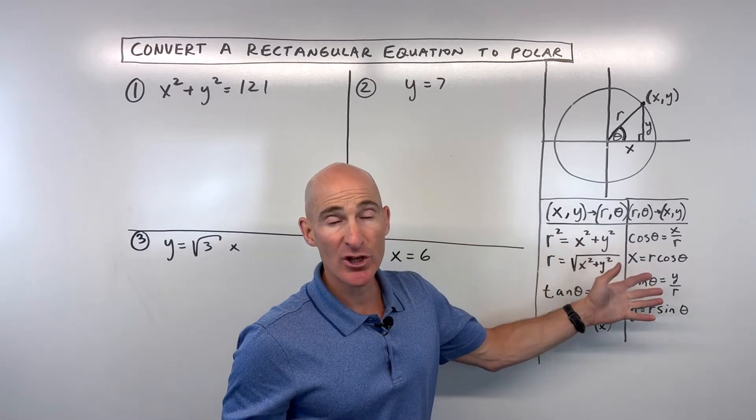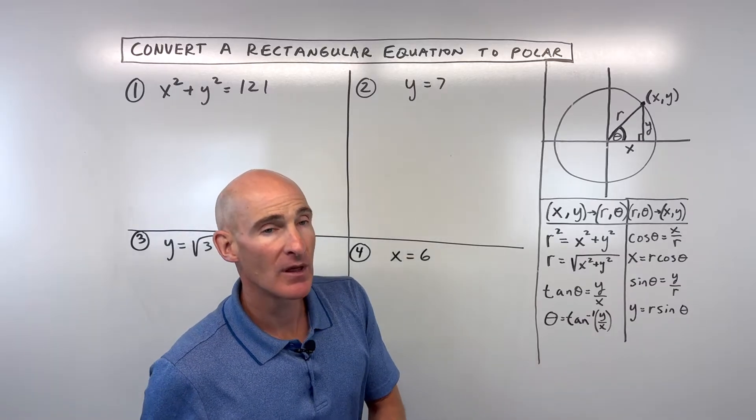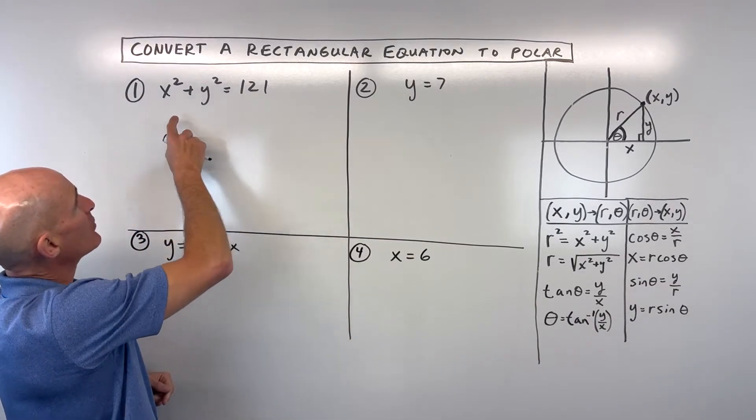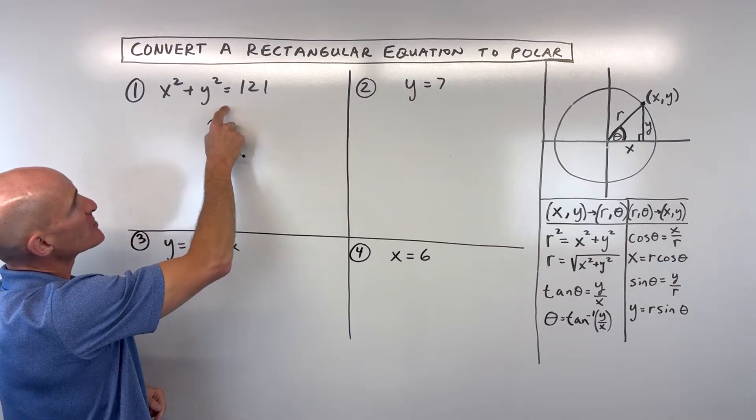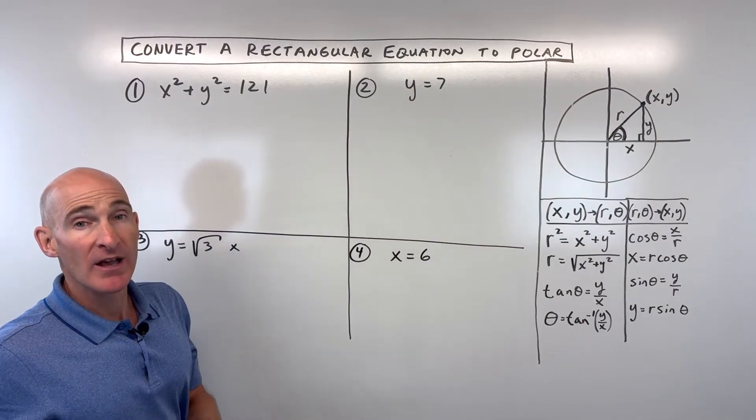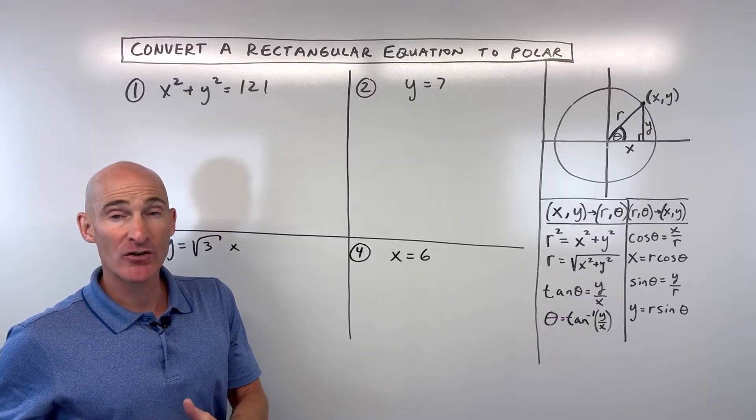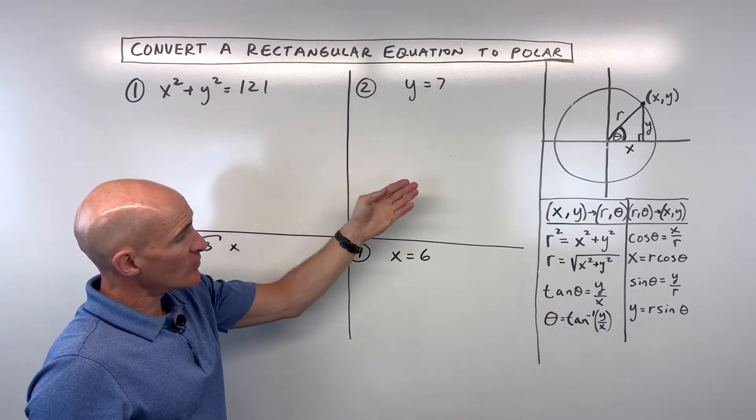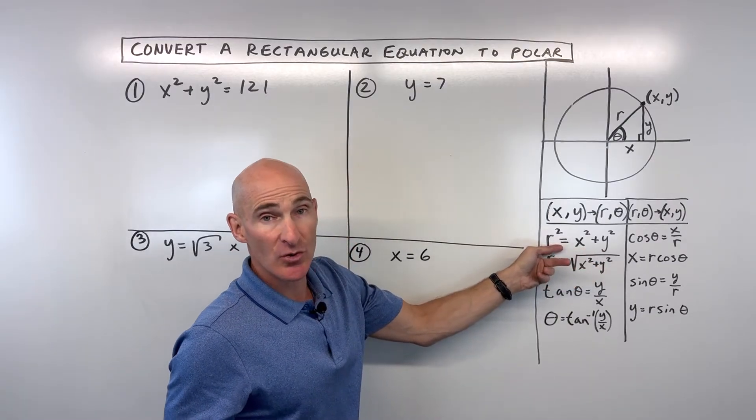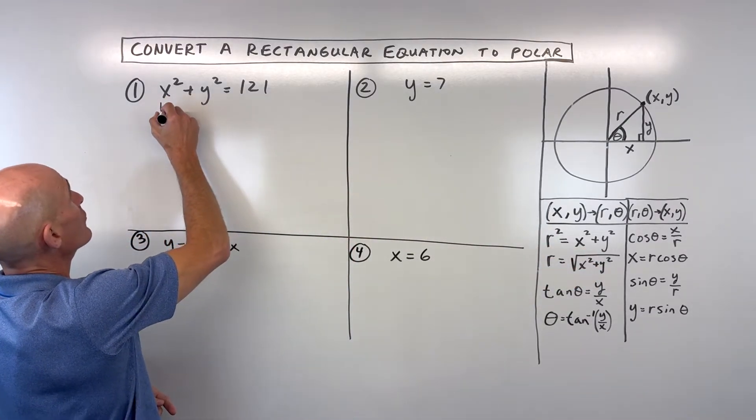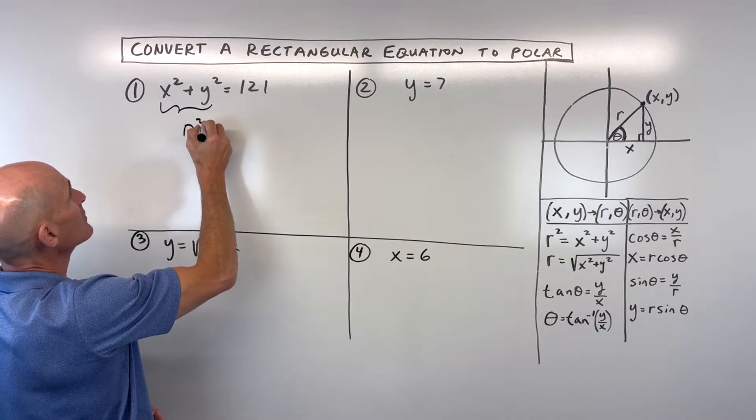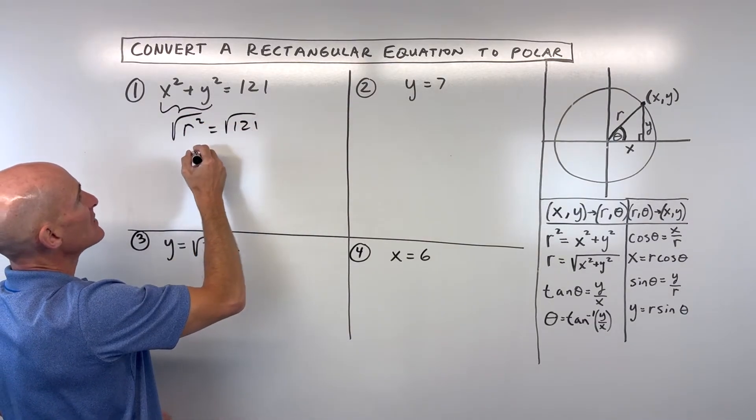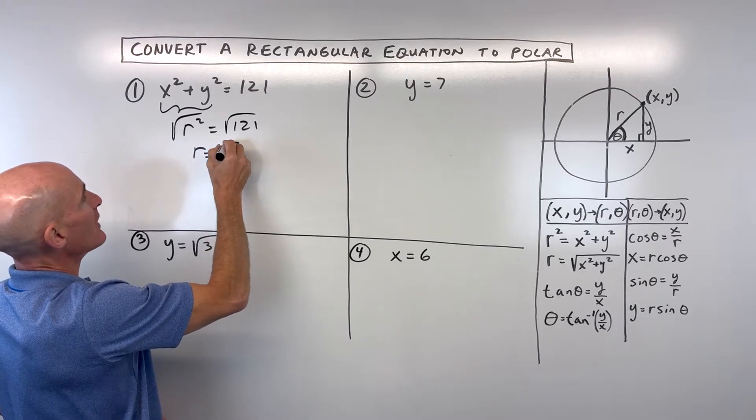So these are some relationships that we're going to use in converting from rectangular equations to polar equations. Starting with example number one, we've got x squared plus y squared equals 121. You might recognize this as the standard form of the equation of a circle. But notice x squared plus y squared is equal to r squared. So let's go ahead and replace this with r squared. And then if we take the square root of both sides,